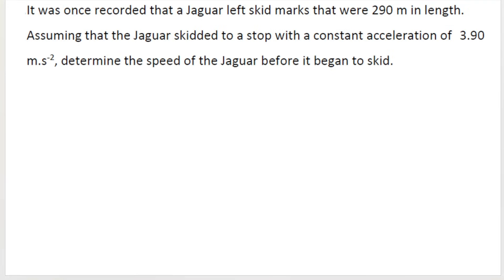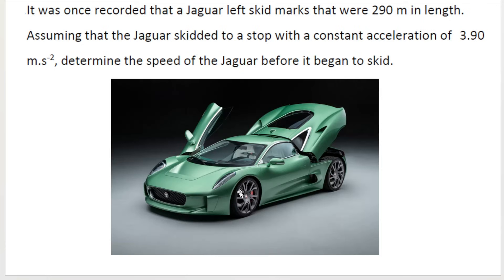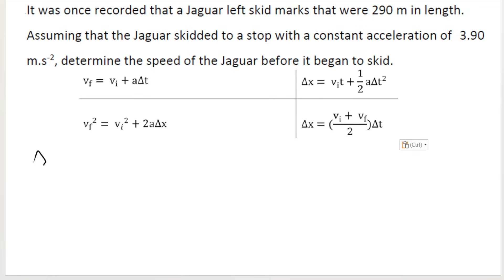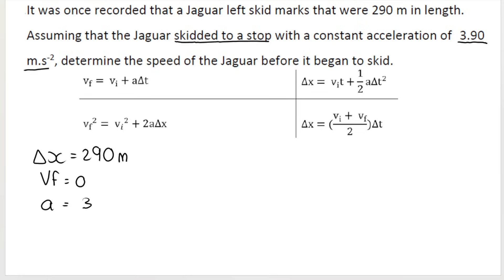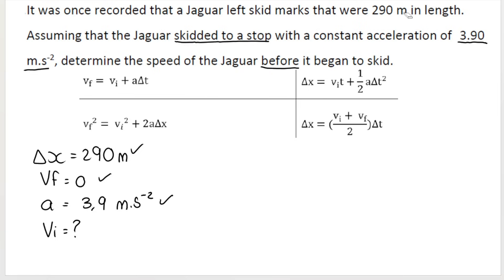Last example: a Jaguar left skid marks 290 meters in length. So the displacement is 290 m. The Jaguar skidded to a stop, so final velocity VF = 0. It decelerated with a constant acceleration of 3.9 m/s². Determine the speed of the Jaguar before it began to skid. We're given three variables: VF = 0, displacement = 290 m, and acceleration = 3.9 m/s². The catch in this question is choosing the correct sign for acceleration.